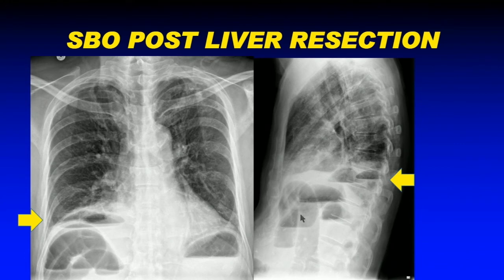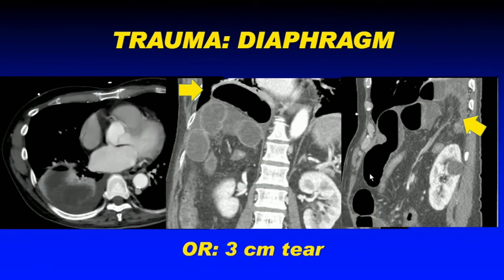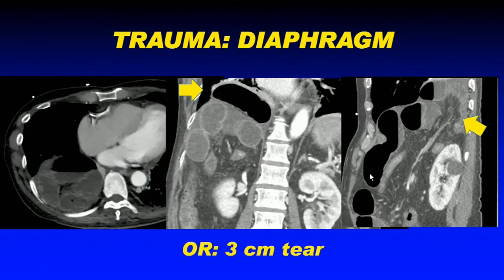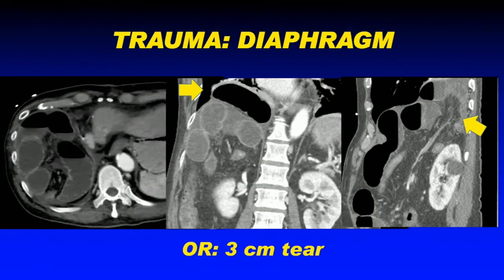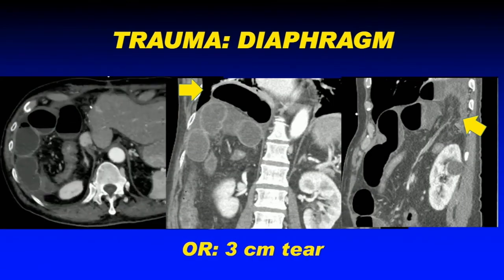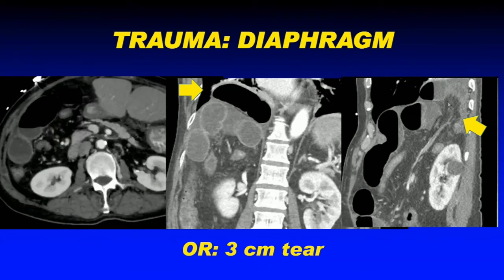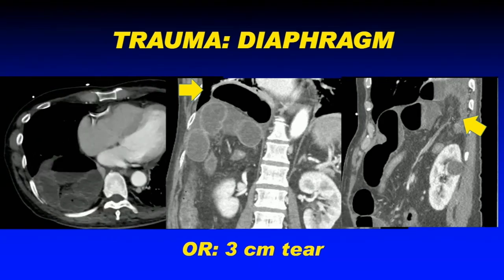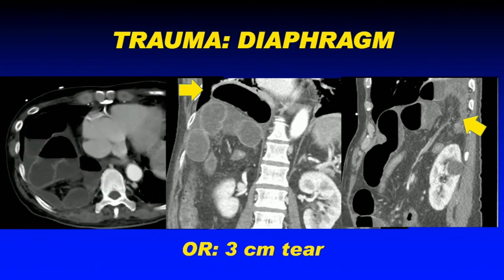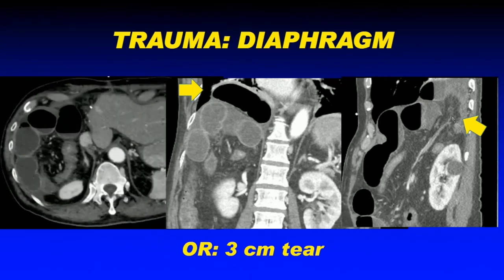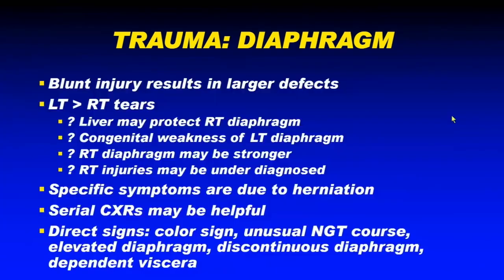A third patient had a liver resection for hepatocellular carcinoma approximately three weeks prior and came with small bowel obstruction. Air-fluid levels were present not only in the abdomen but also in the lower chest just above the hemidiaphragm. In the operating room, abdominal contents were found prolapsing through a large three-centimeter defect, recognized as a diaphragmatic injury due to the prior surgical intervention.